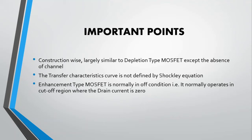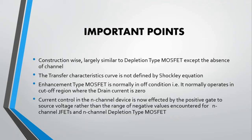The enhancement type MOSFET is normally in OFF condition, that is, normally in open condition. It normally operates in the cutoff region where the drain current is zero. The current control in the N-channel enhancement type MOSFET is affected by the positive gate-to-source voltage. The drain current control is affected by positive VGS rather than the range of negative values used for the N-channel JFET and N-channel depletion type MOSFET.